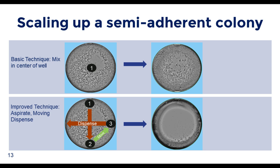As we incorporate new plate types and translate to automation, we face converting manual semi-adherent colony transfer to an automated liquid handler method. Manually, this involves pipetting up and down while moving the tip across the bottom of the well, then tipping the plate to aspirate. A basic liquid handling technique of briefly mixing only in the center of the well transfers limited cells. Solutions include multiple mixes for small wells like those in 384-well plates, though excessive aspiration or dispense speed — or excessive mixes — could affect cell health.